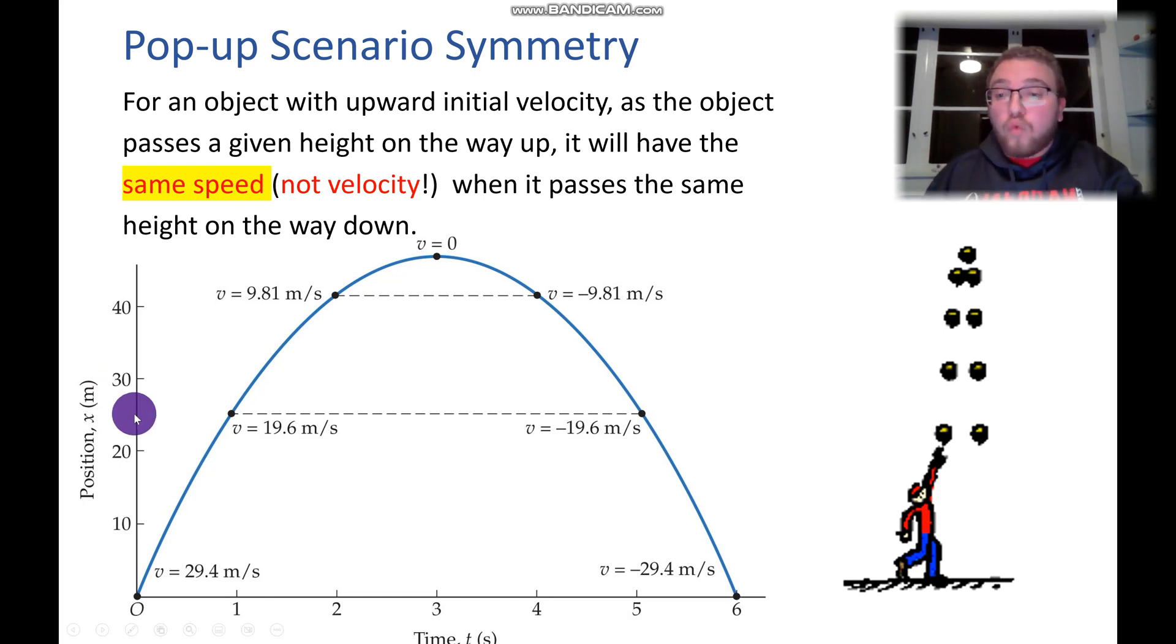The object will have the same speed at every height along its journey. So at 25 meters or one second and five seconds, the object has the same speed of 19 meters per second. Just one is going up, and one is coming down. So they have opposite signs.